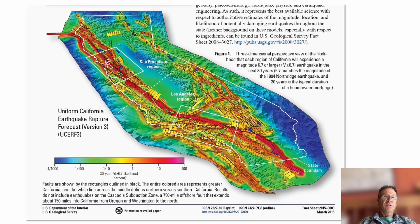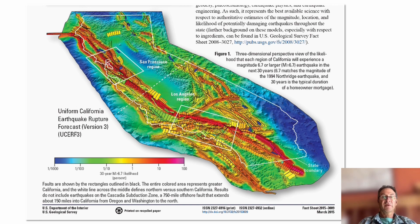The underlying expertise at the USGS is on hazard evaluation. This is the UCERF-3 hazard map — the fault rupture forecast for California. For all of these faults, we have the likelihood or probability of them rupturing over a certain amount of time, which feeds into our national seismic hazard map.